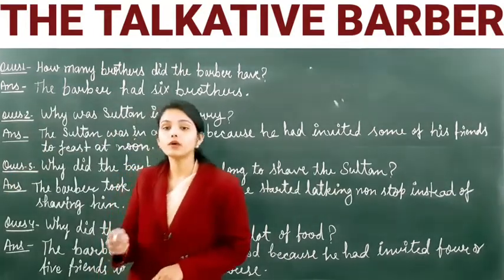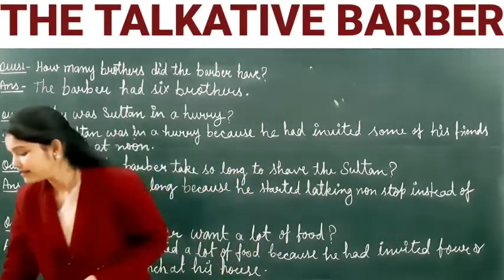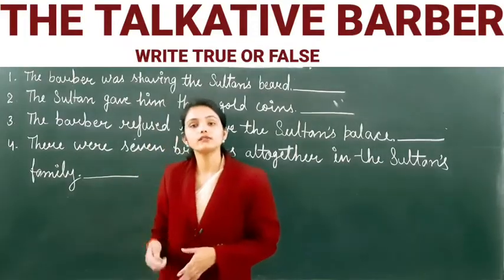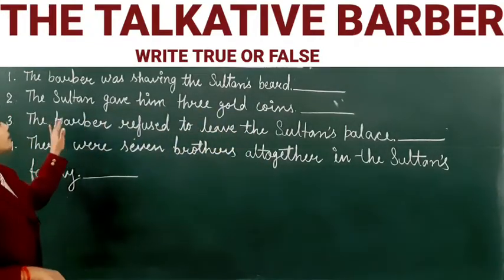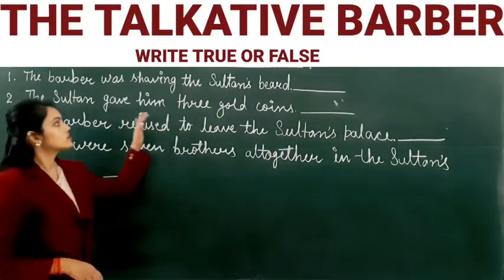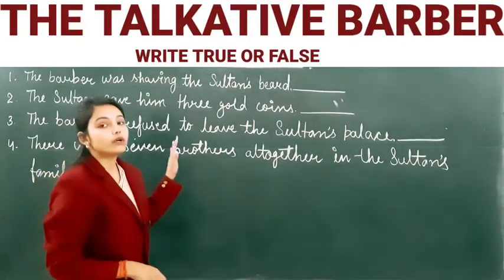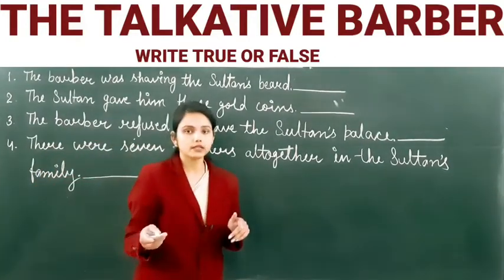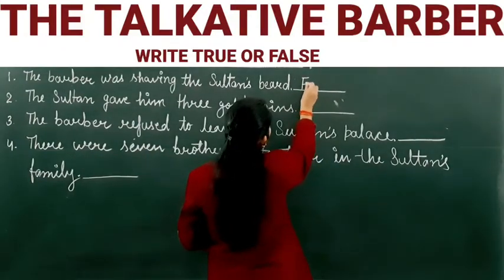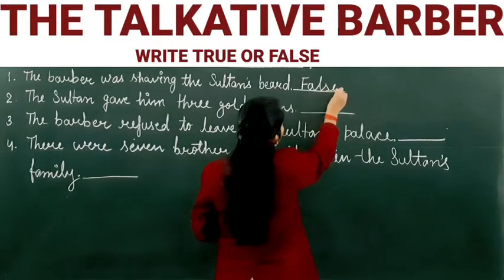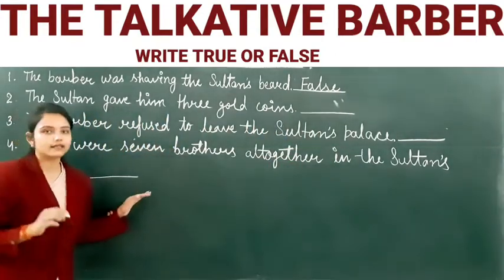Now let's solve some true or false. First sentence: The barber was shaving the Sultan's beard. That is false — the barber was shaving the Sultan's head.